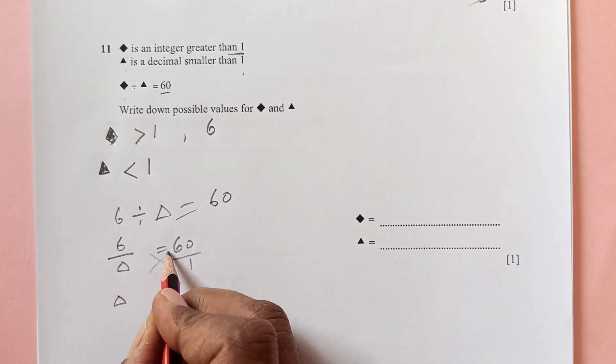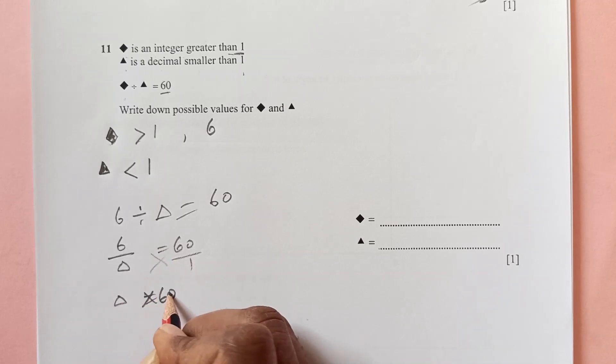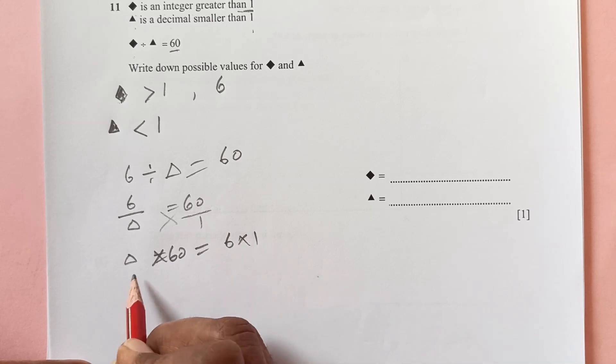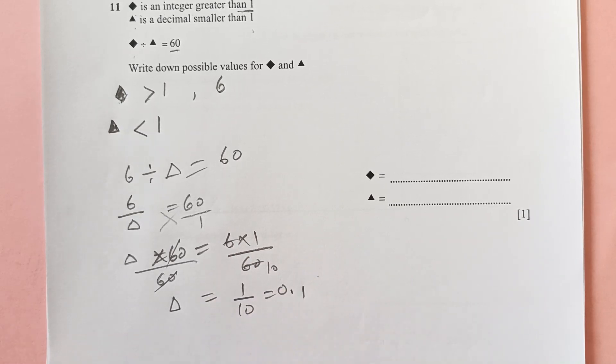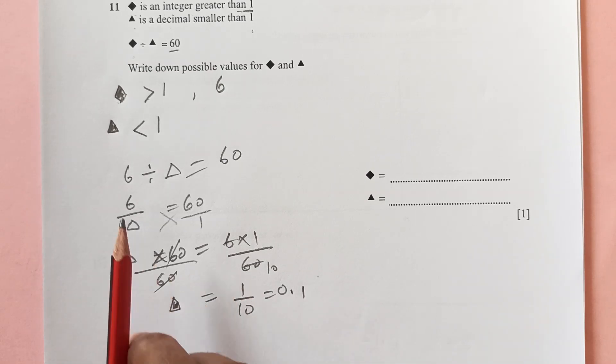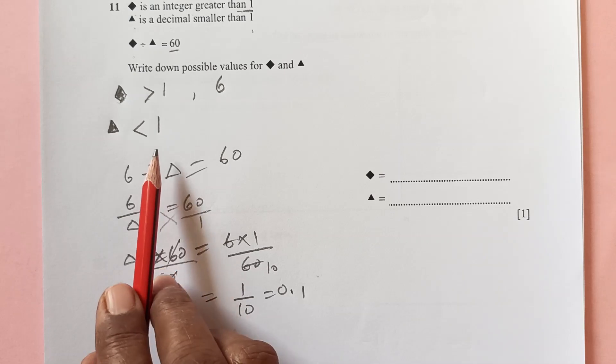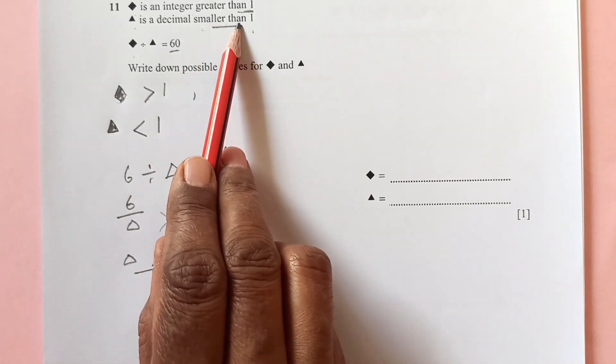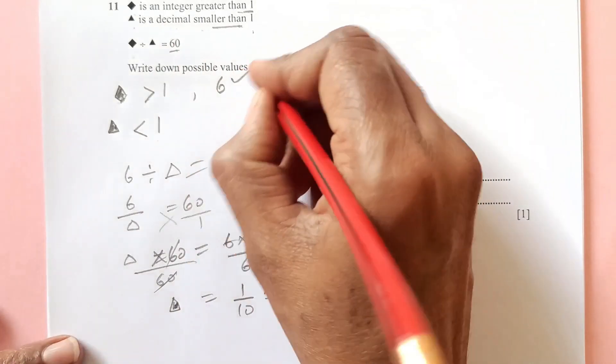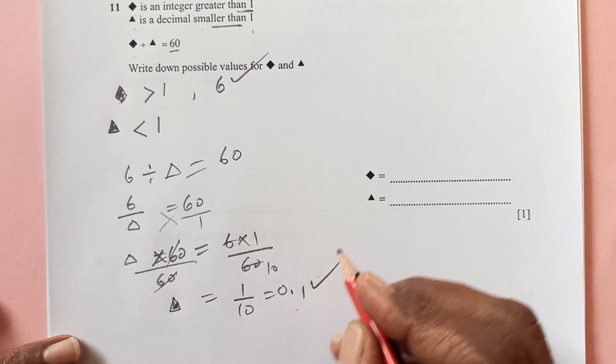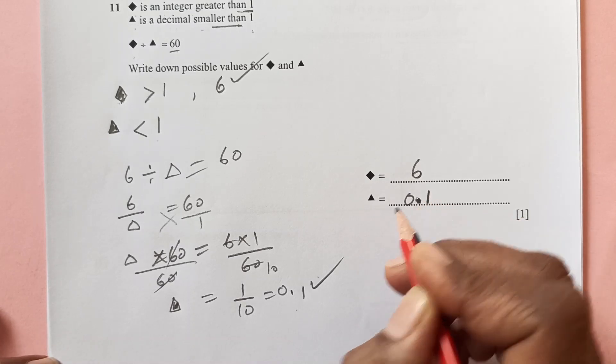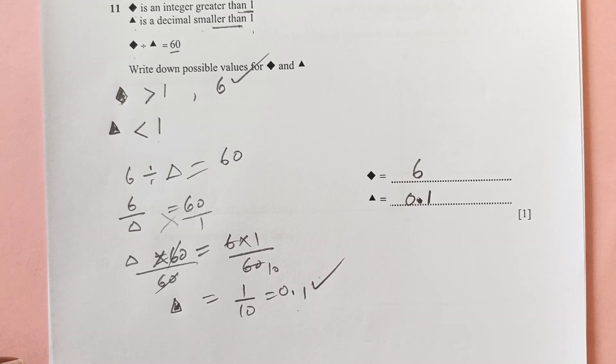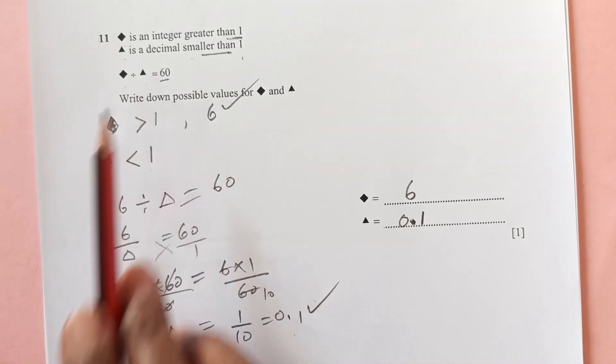If this is 6, divided by what gives you 60? So 6 divided by this triangle is 60. When you cross multiply, this triangle is going to be times 60 equals to 6 times 1, divide by 60. This is 1 over 10, that is 0.1. Let's see if it satisfies that. Triangle is less than 1 and smaller than 1, a decimal. So we got this a decimal. This is working, 6 and 0.1. So this is 6 and this is 0.1. You may have different answers because there are many numbers when you divide and you get 60.